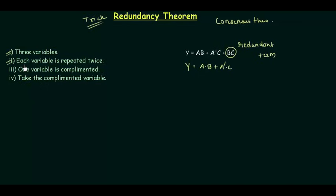The second condition is each variable is repeated twice, and the repetition may be in the normal form or in the complemented form — there is no problem with that. Like a is repeated here and here: here it was a and here it is a-complement. b is also repeated, and c is also repeated. So all the variables are repeated, and condition number two is also satisfied.